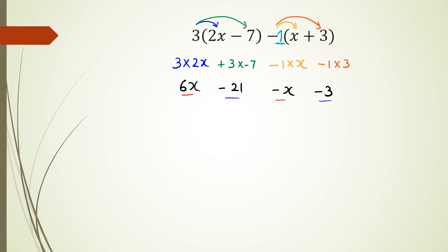So 6x minus x, that's going to be 5x. Negative 21 minus 3 is going to be negative 24.